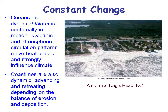Oceans are dynamic — water is constantly in motion. The oceanic and atmospheric circular patterns move heat around and strongly influence climate. Coastlines are dynamic too, advancing and retreating depending on the balance of erosion and deposition. Here's a storm at Nags Head, North Carolina, and some of those houses are in trouble.